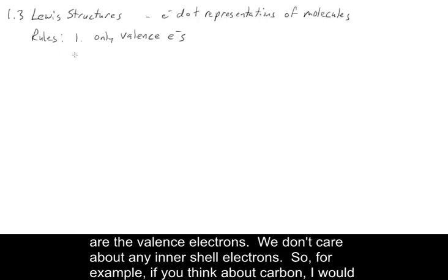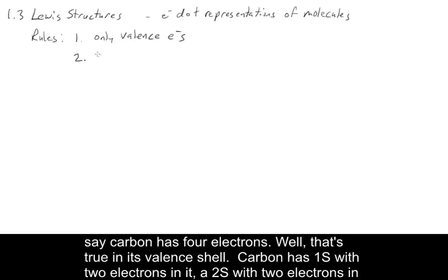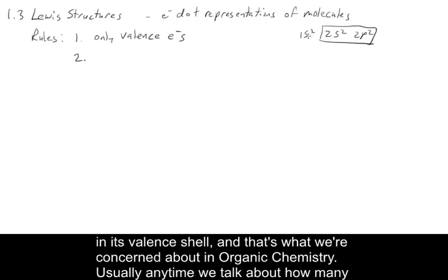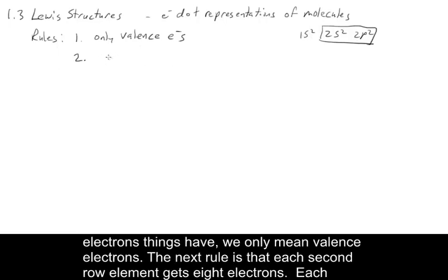We don't care about any inner shell electrons. For example, if you think about carbon, I would say carbon has four electrons — that's true in its valence shell. Carbon has a 1s with two electrons, a 2s with two electrons, and a 2p with two electrons, so carbon really has six. But it only has four in its valence shell, and that's what we're concerned about. Anytime we talk about how many electrons things have, we only mean valence electrons.